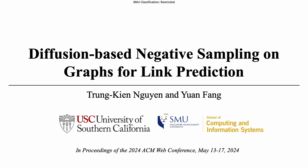Hi everyone, I'm Kian. It's my pleasure to introduce our paper, Division-Based Negative Sampling on Graphs for Link Prediction. This is a joint work by Kian and Yun from USC and SMU.